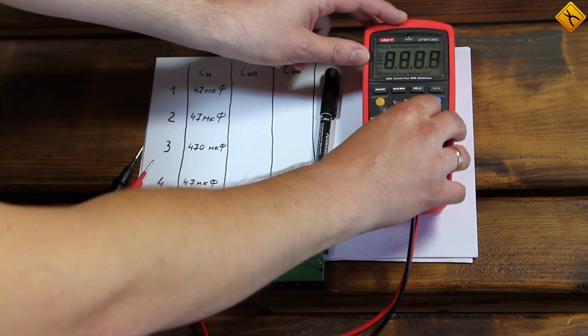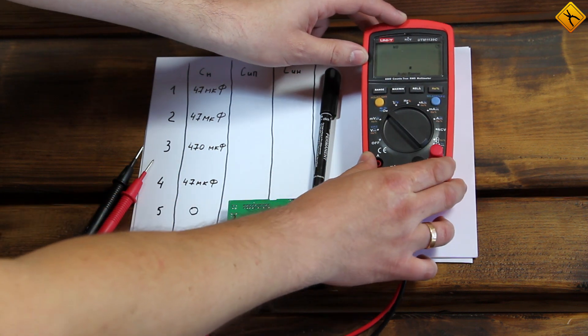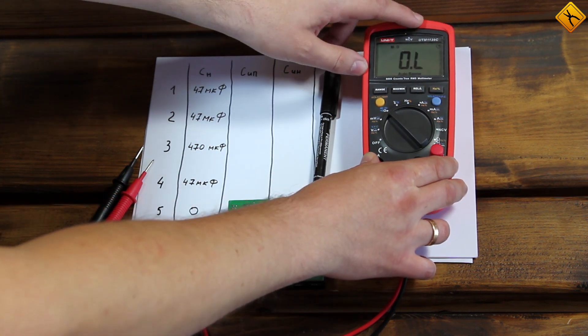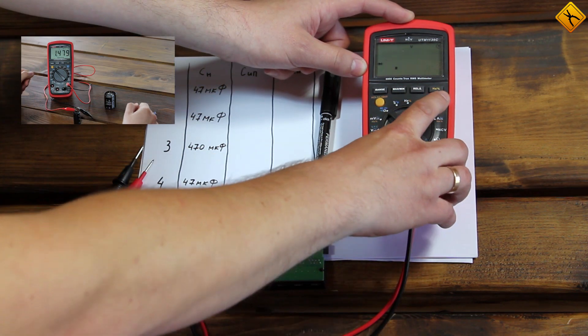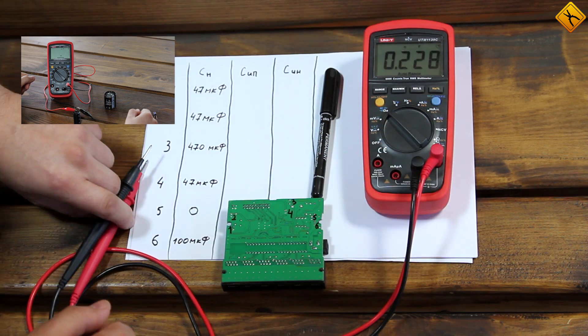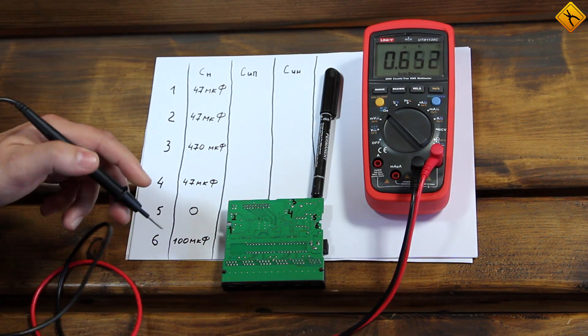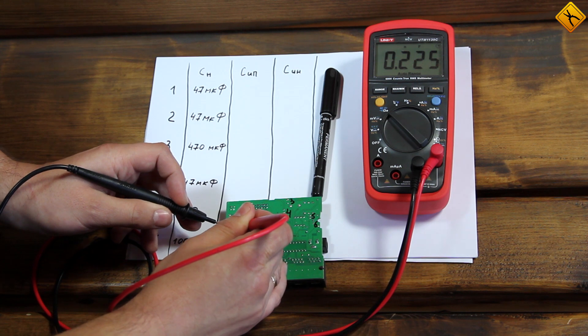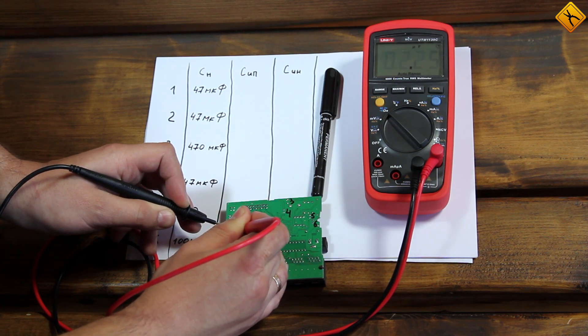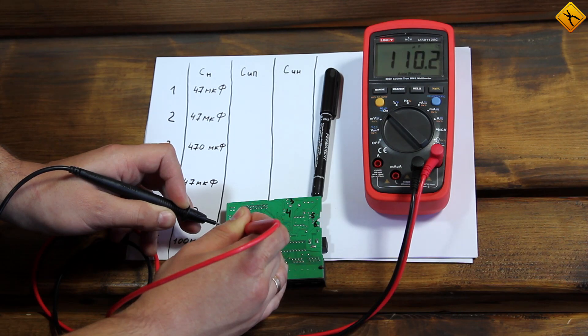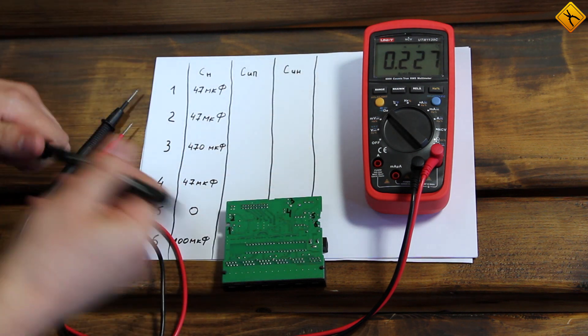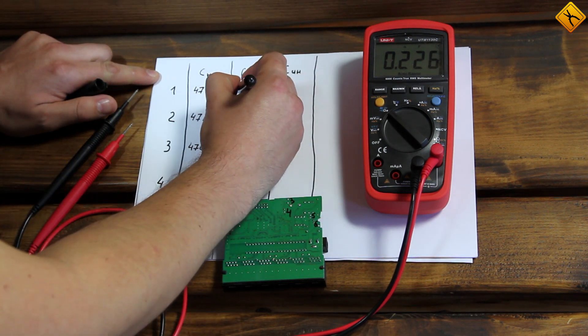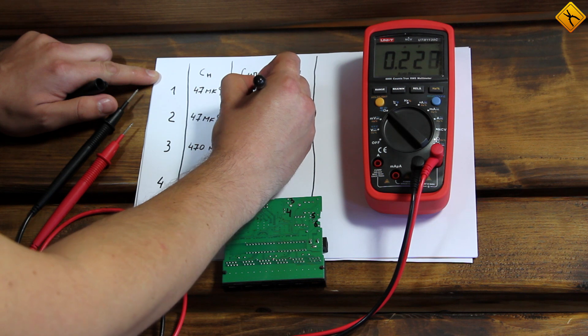We'll turn on the multimeter. As you can see, I chose a UNIT UT139C because it measures capacitance very well. We also have another video about this. So let's measure point one. The capacitance is one hundred microfarads. It's supposed to be 47. We already see an inconsistency.